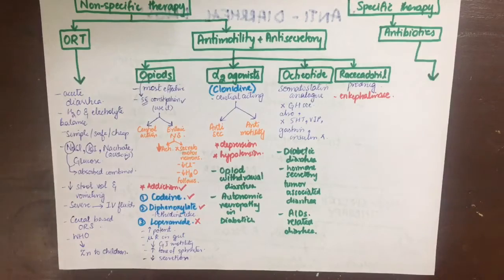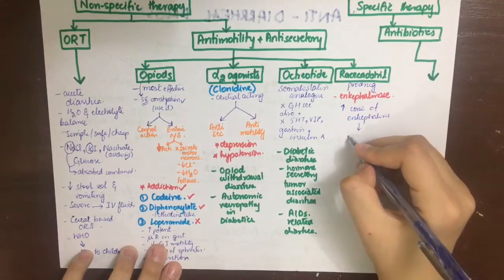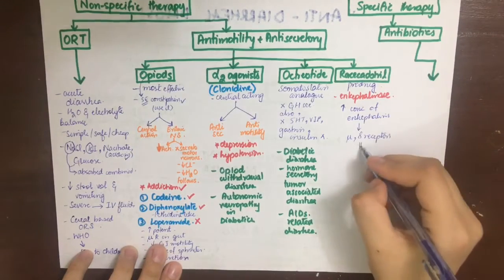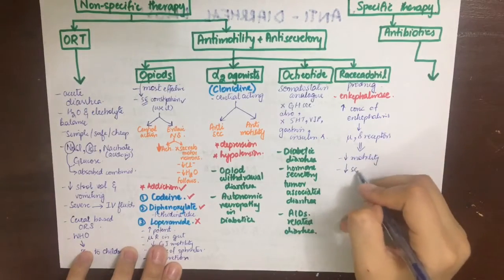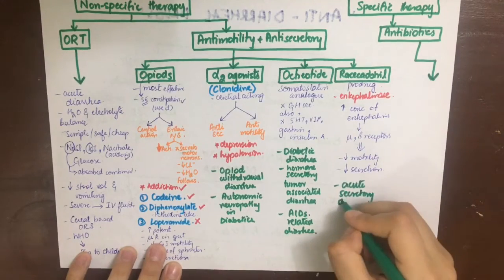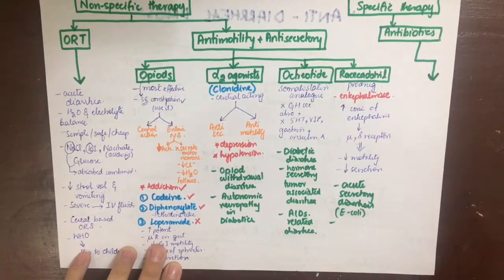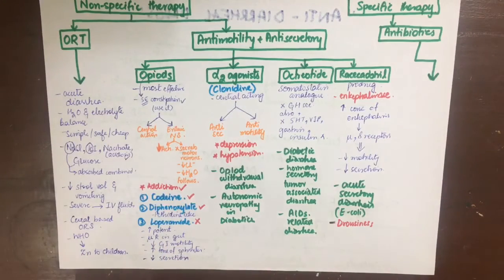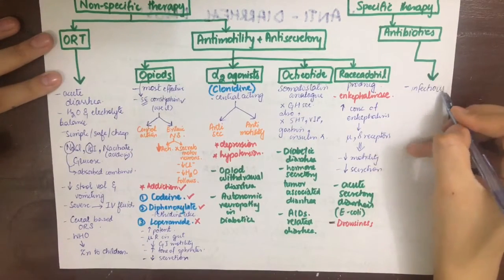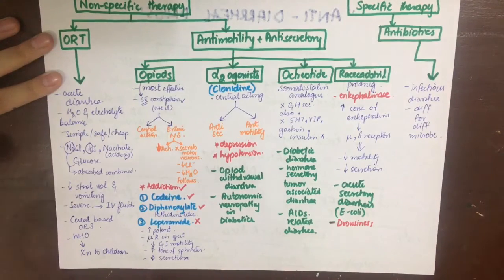The next anti-motility and anti-secretory agent is racecadotril. It is a prodrug which is converted into an enkephalinase inhibitor. Since enkephalins are endogenously produced opioids, inhibiting the enzyme that degrades them increases enkephalin concentration in the intestinal mucosa. These then act on mu receptors causing decreased motility and decreased secretion, just like opioid analogs. It can be used in acute secretory diarrhea such as that caused by E. coli. Side effects include mainly drowsiness.